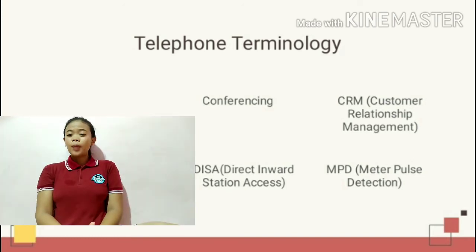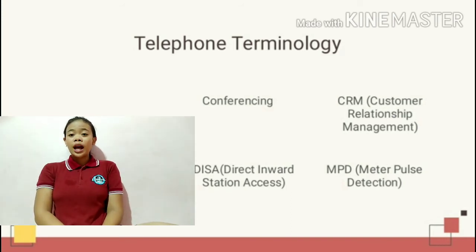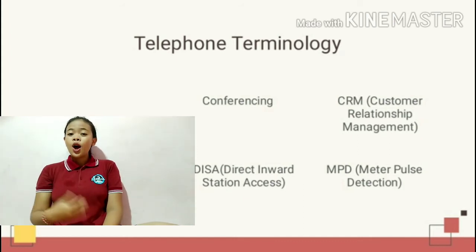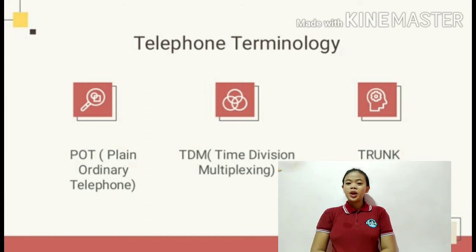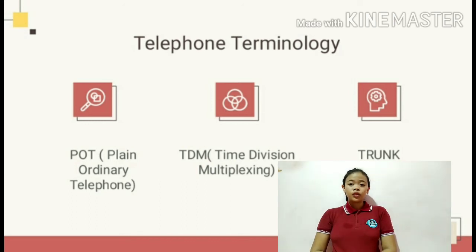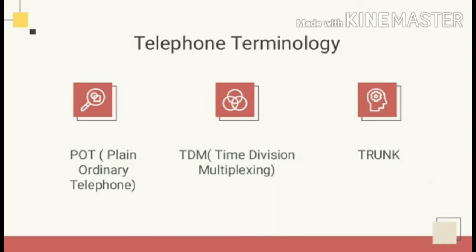The next is MPD, Meter Pulse Detection — a service for analog lines to allow a subscriber to accurately establish the charge of a telephone call. The next is POT, or Plain Ordinary Telephone — used to distinguish an ordinary analog telephone from a key phone. Also known as a SLT, or Single Line Telephone.